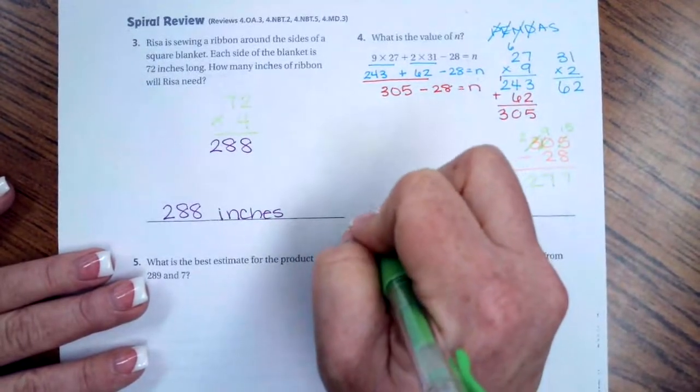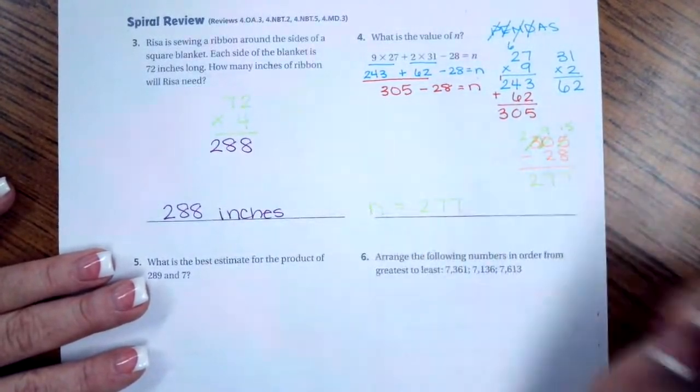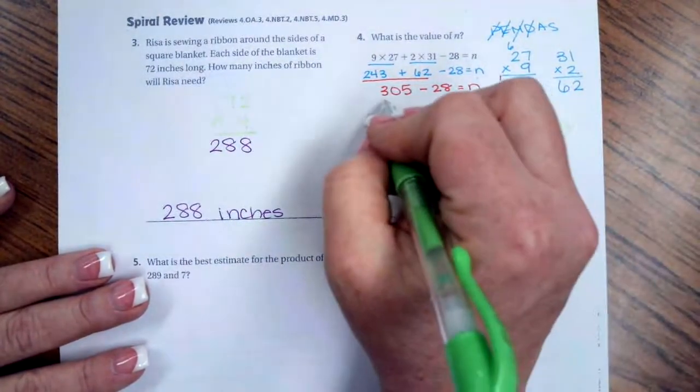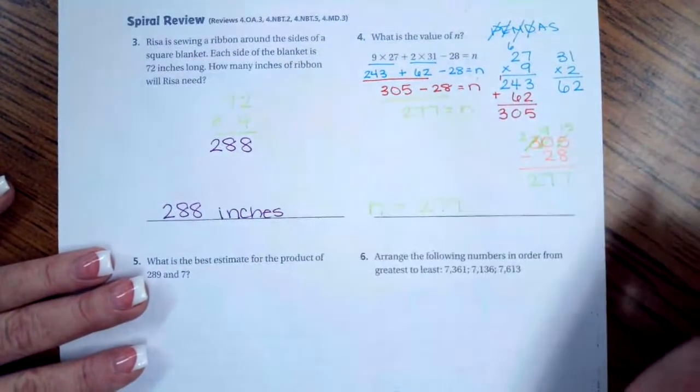So now, 15 minus 8 is 7. 9 minus 2 is 7. And then I'm going to bring down my 2. So, n equals 277. This is 277 equals n.